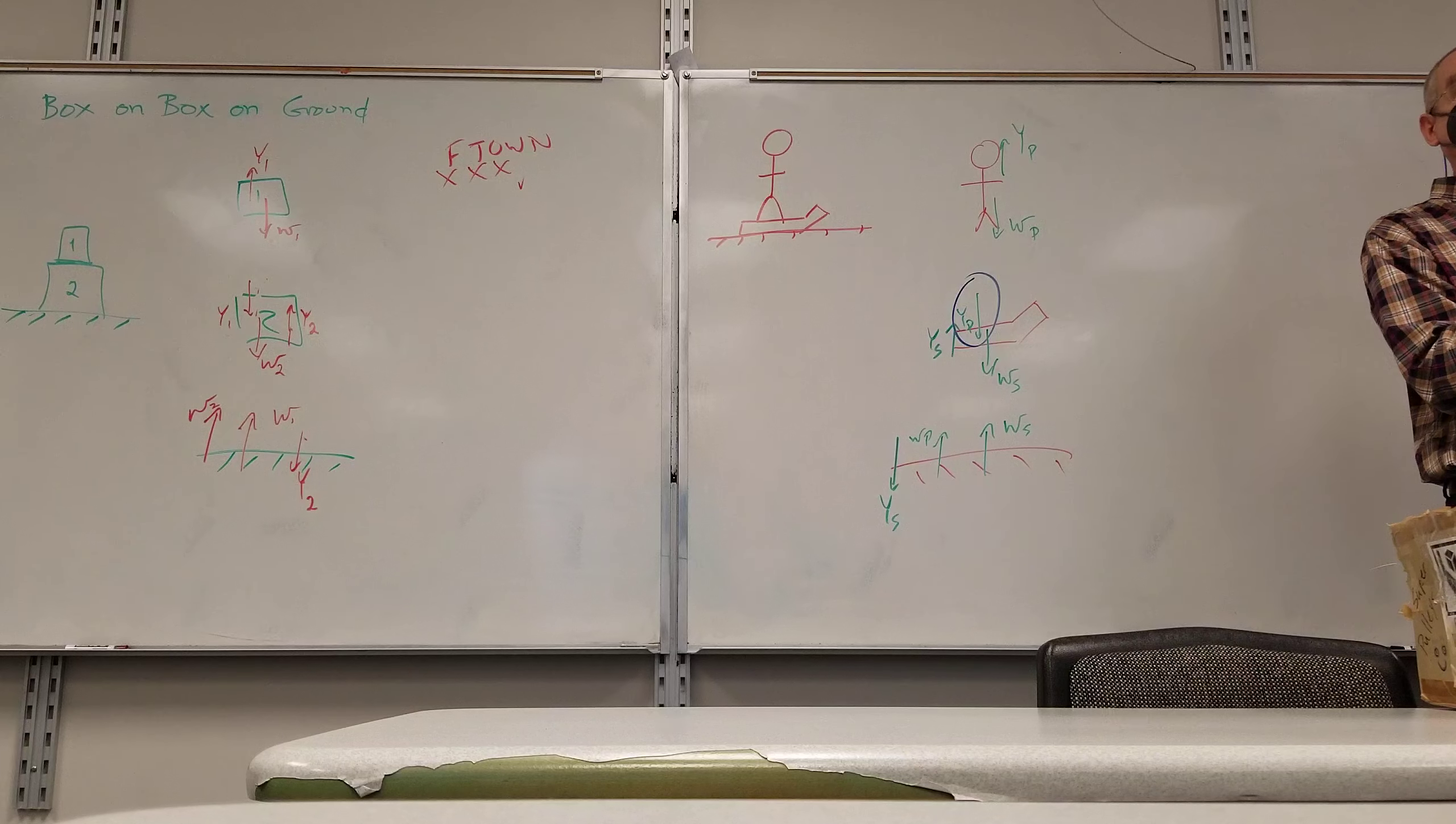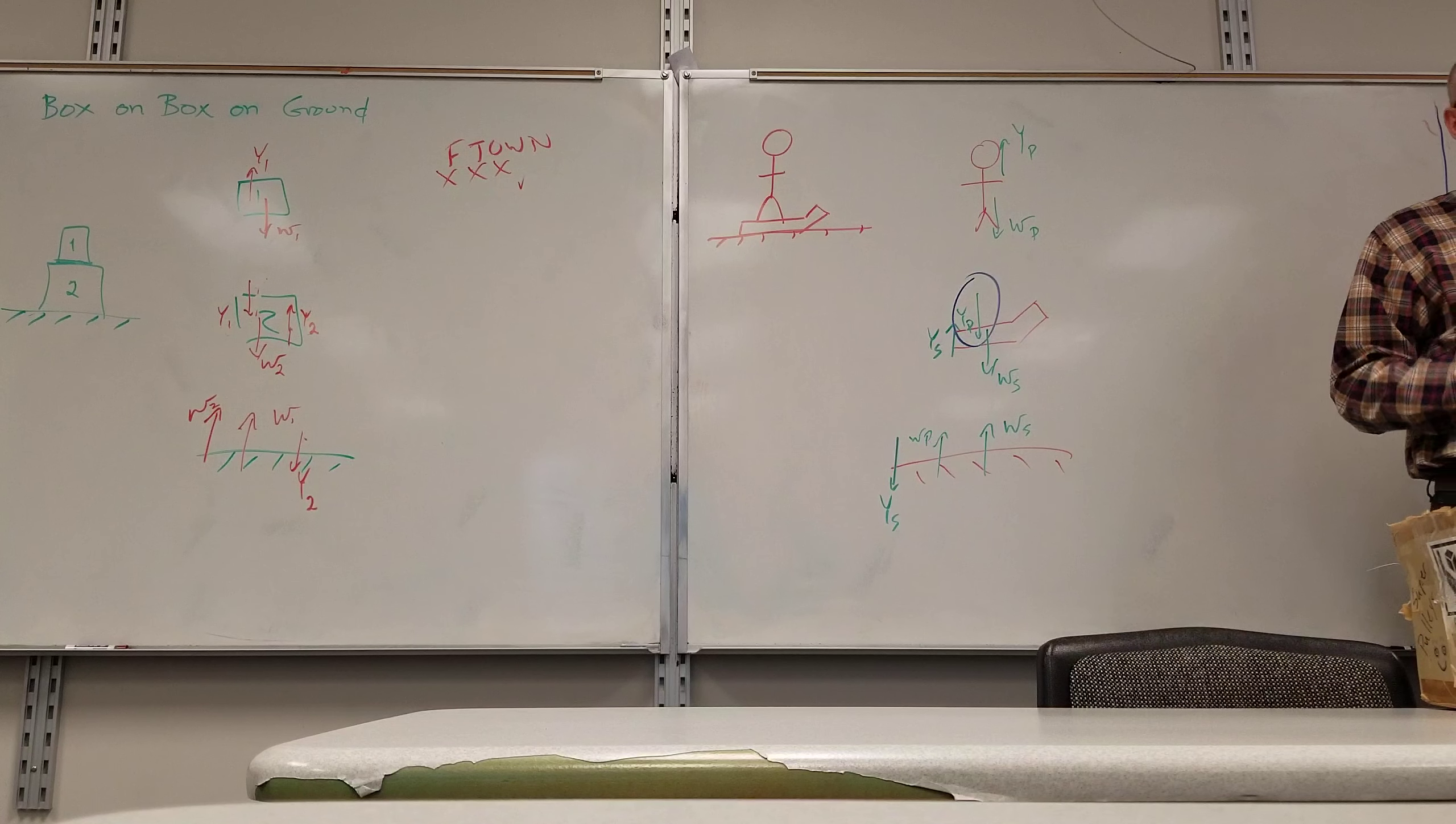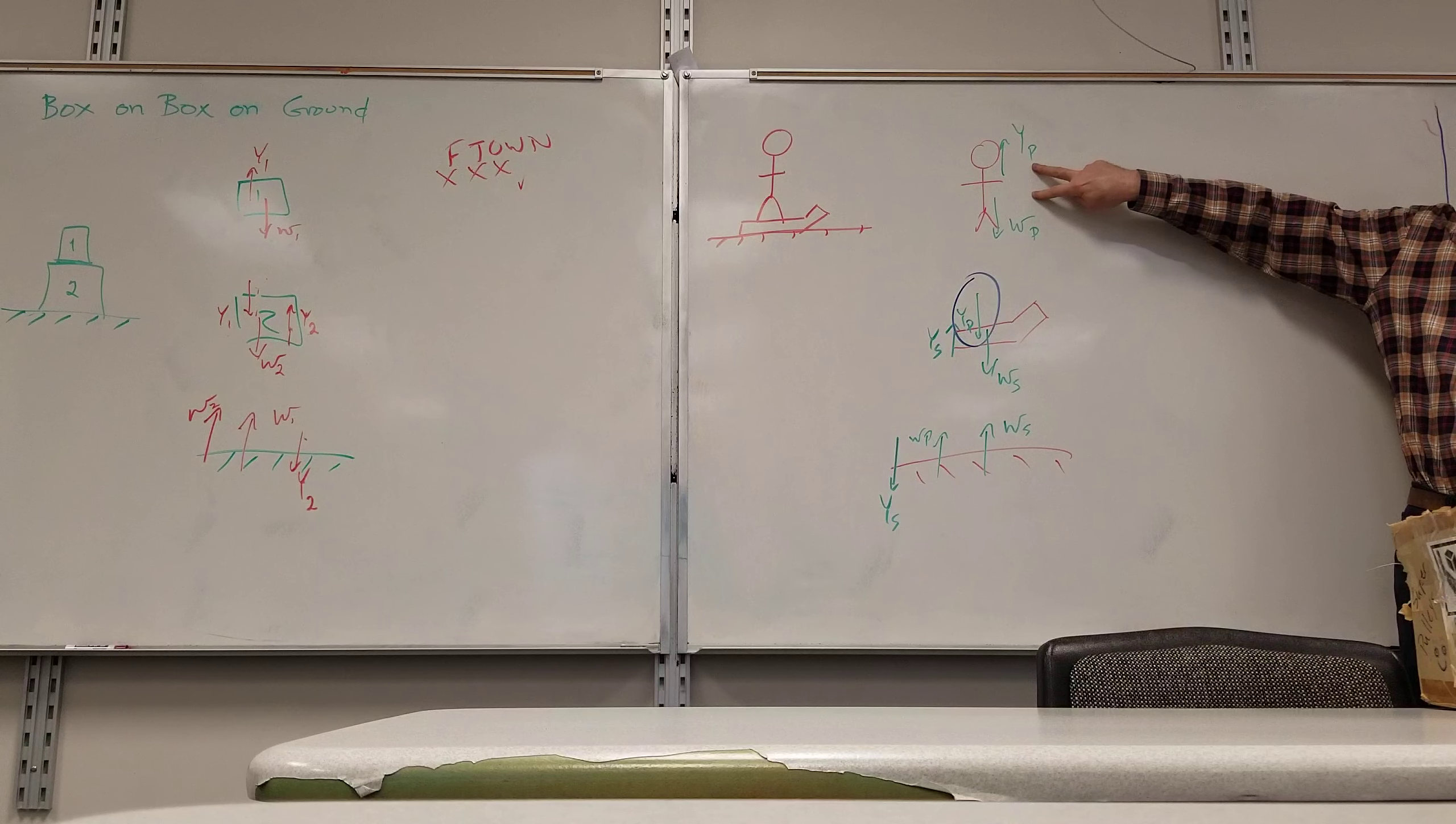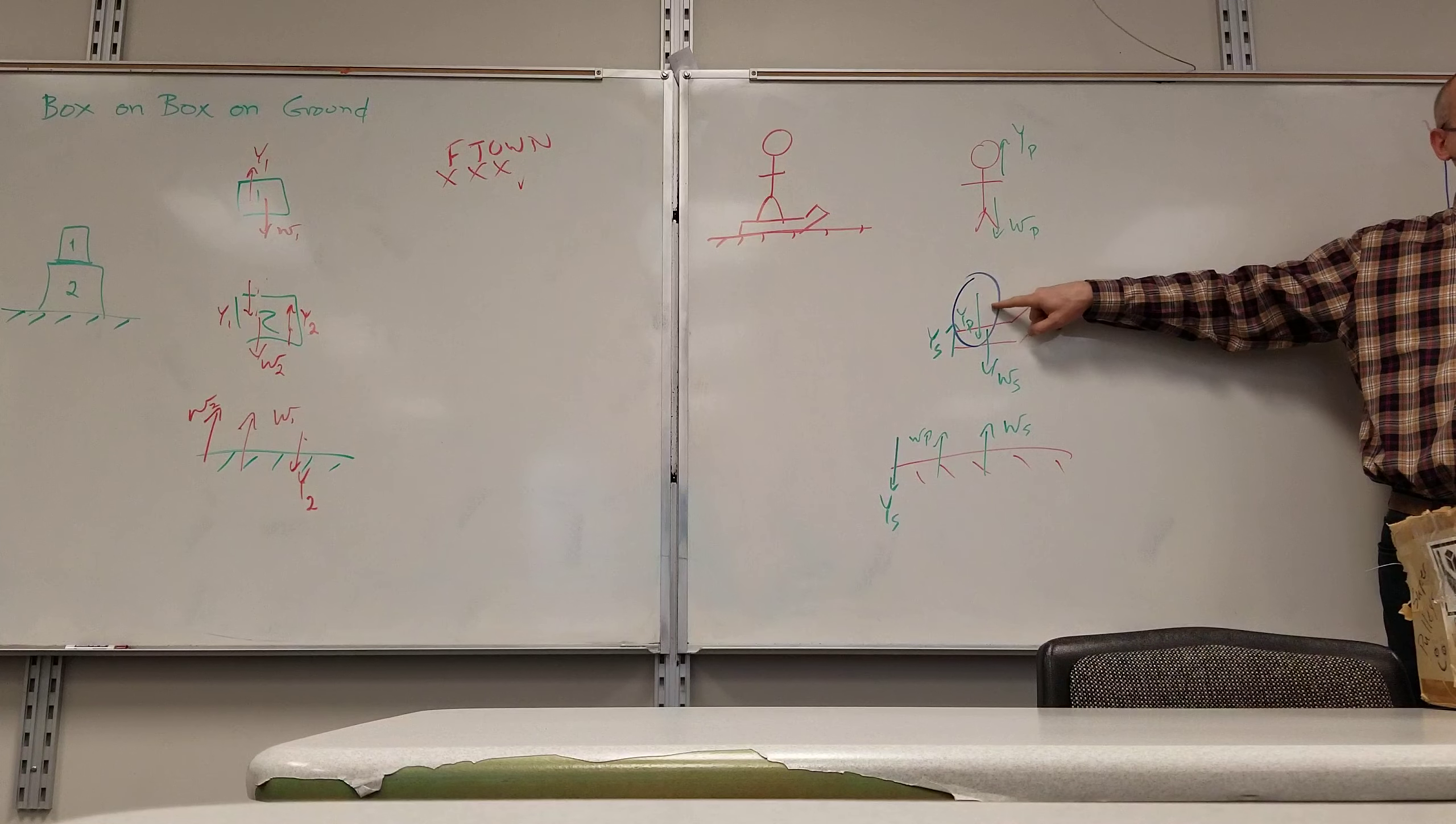When you first step on it, the normal force is more than your weight because it's trying to stop you from falling. And then you eventually get to a point where it's in equilibrium. You get to a certain point when you're not accelerating anymore, you're just standing there. At that point, these two forces are equal in magnitude. So the normal force is equal to your weight in magnitude.